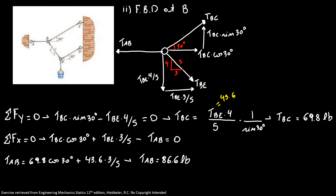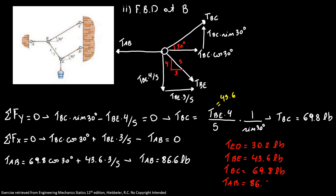Summarizing the steps that guided us to our answers: tension ED is equal to 30.2 pounds — that was the first tension we found. After that, we found tension BE equal to 43.6 pounds. Then we found tension BC equal to 69.8 pounds. And in the end, we found tension AB equal to 86.6 pounds. Thanks for watching until the end. Please like this video if you haven't done so. Thank you so much — see you in the next video.